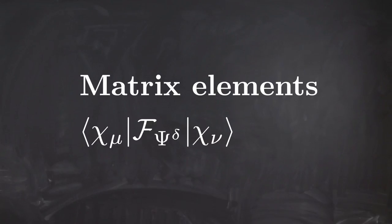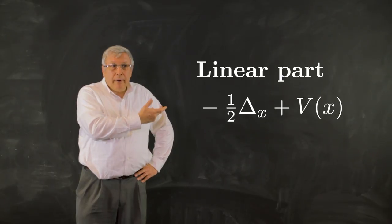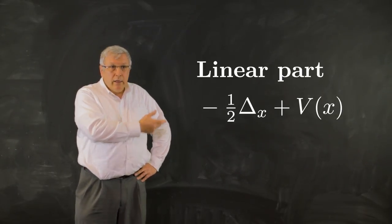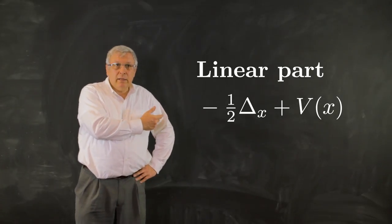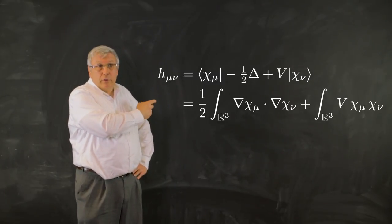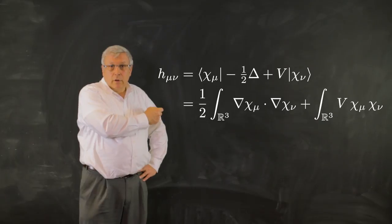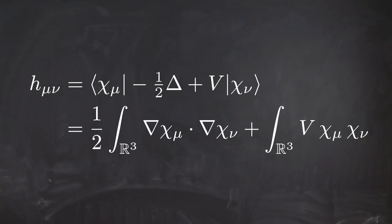We thus have to compute the matrix elements ⟨χ_μ, F[ψ^δ]χ_ν⟩. The Fock operator is composed of four parts. Let us focus first on the linear part: minus one-half of the Laplacian plus V. The corresponding matrix coefficients are H_{μν} = ⟨χ_μ, (-½Δ + V)χ_ν⟩, which written as an integral is: ½ ∫_{ℝ³} ∇χ_μ · ∇χ_ν dx + ∫_{ℝ³} V χ_μ χ_ν dx, where the first term is obtained by integration by parts from the Laplacian.